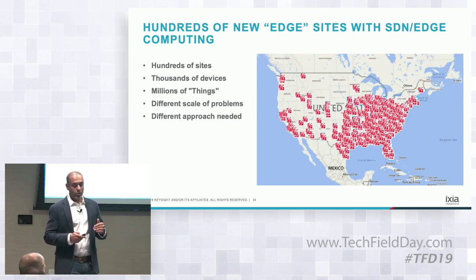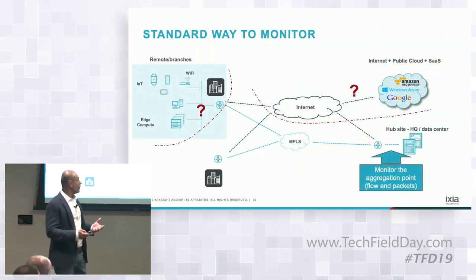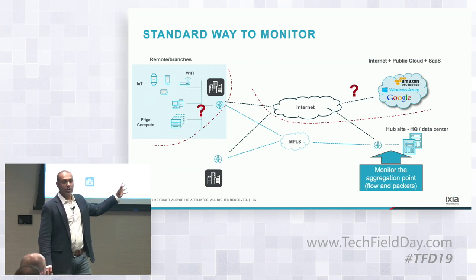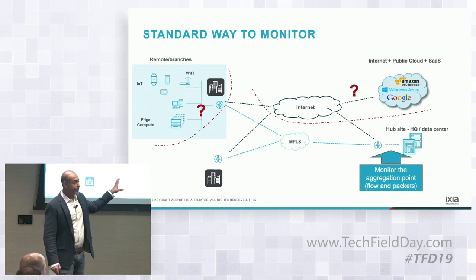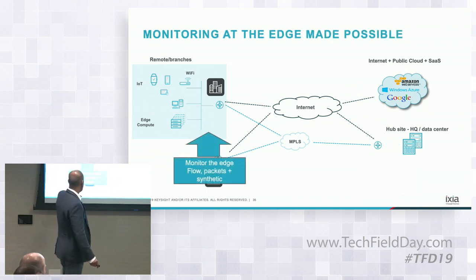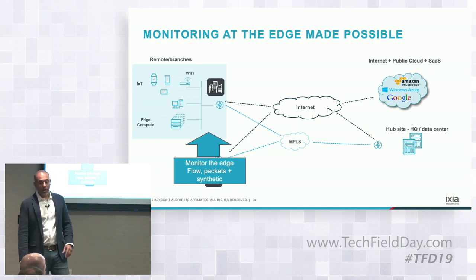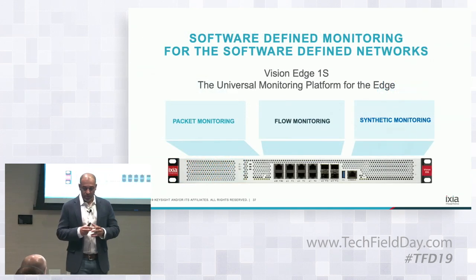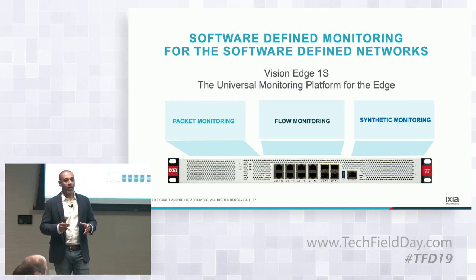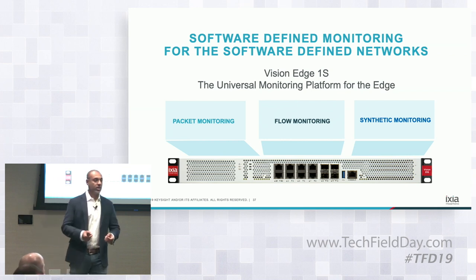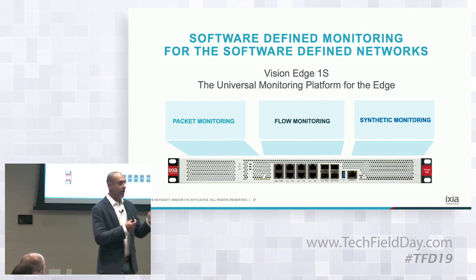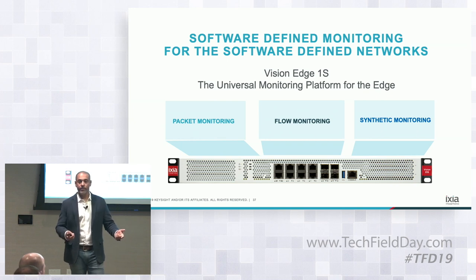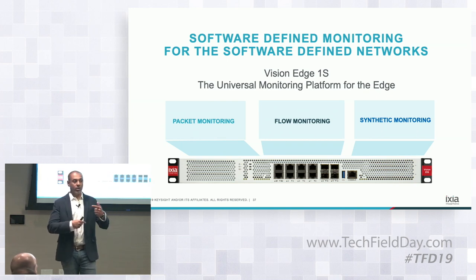You're not in 15 data centers — you're in 15,000 sites. So different approaches are needed. Typically you'd monitor at the hub site, but there's a lot of data that never made it there. What's necessary then is to monitor right at the edge. One of our products in our Vision portfolio is completely software-defined — it's an x86 appliance that we launched in February, and its purpose is to be placed right at the edge.